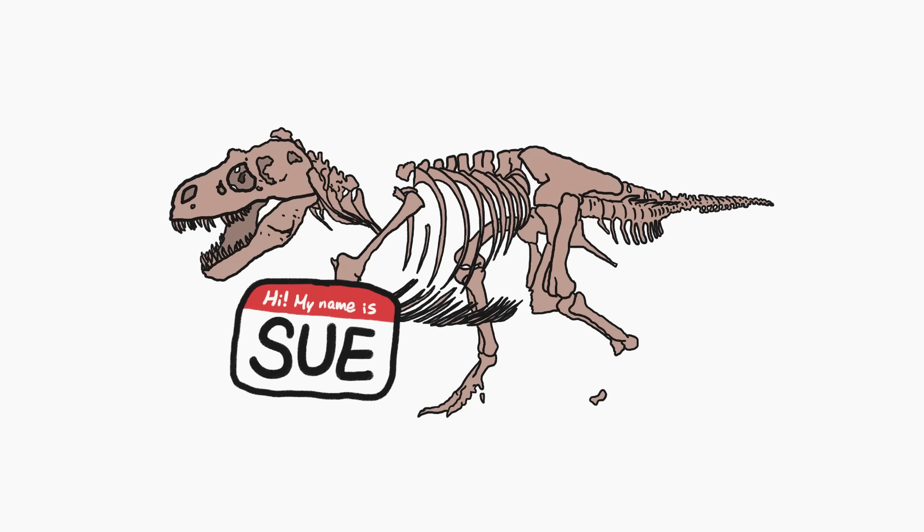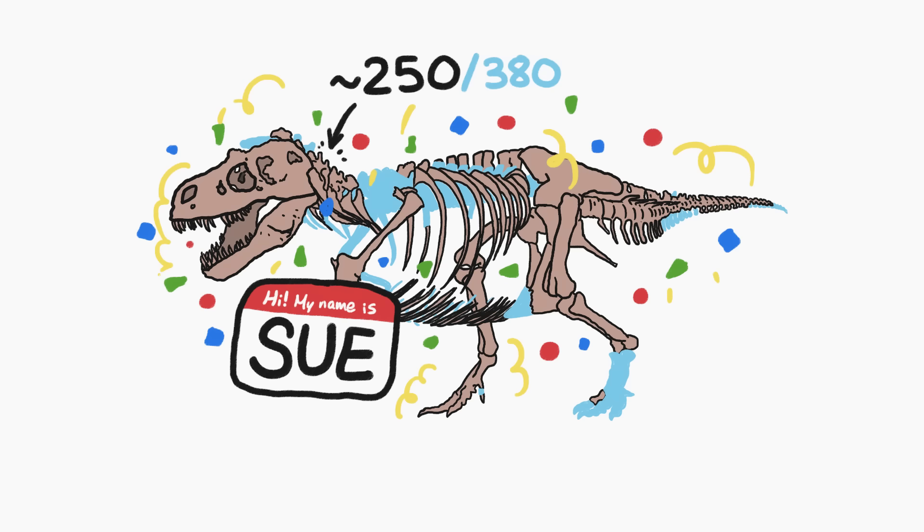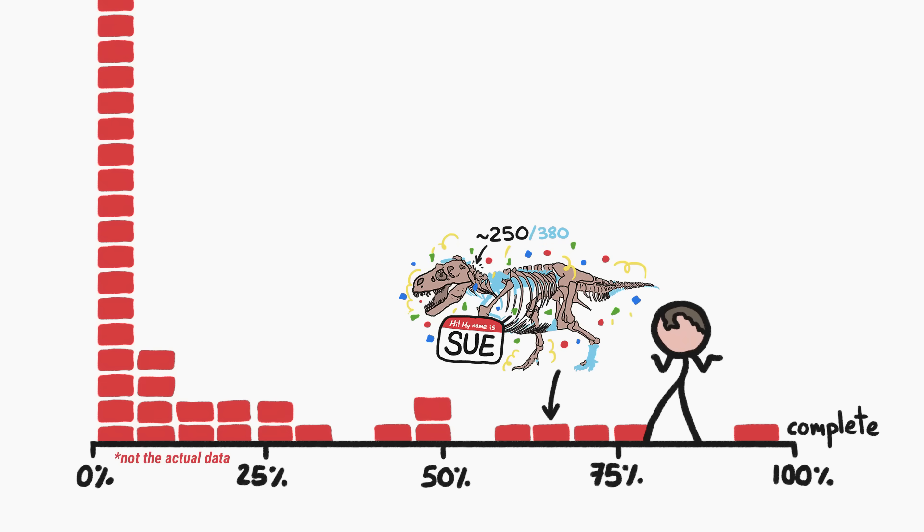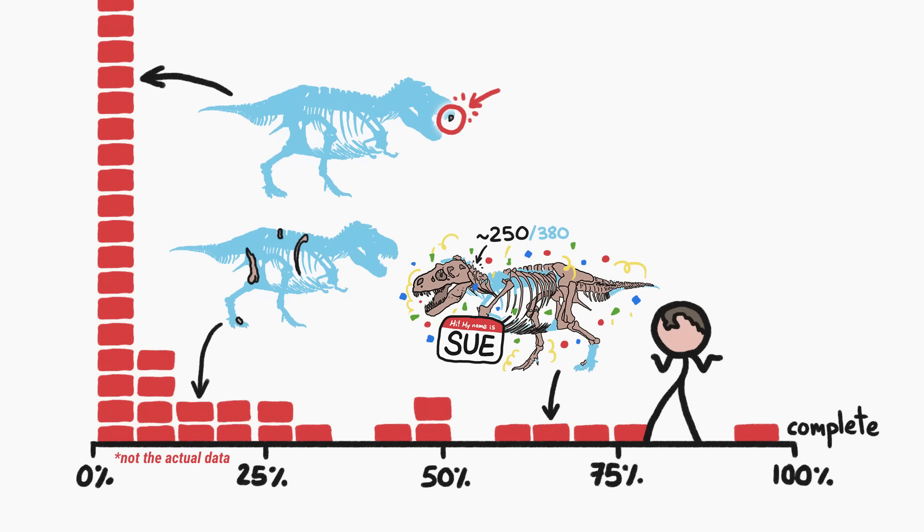The dino, now named Sue, was such a big deal because of how complete it was. The fossilized skeleton had 250 of the 380 or so bones that had once made up the living dino, which might not seem like that much, but the vast majority of dinosaur fossils we find are just a few bone fragments, or a single tooth.